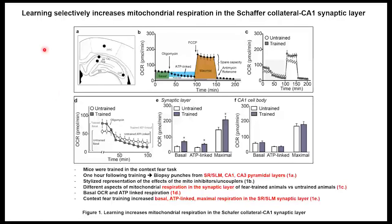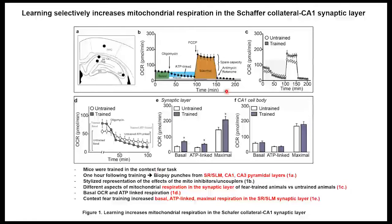Diving into the data — this picture represents the CA1, CA3, and SR/SLM localization. They used mice that were trained, and they compared mitochondria function between trained mice and untrained mice. They took biopsies from the SR/SLM localization, CA1, and CA3 layers, then performed experiments to see the mitochondria function.